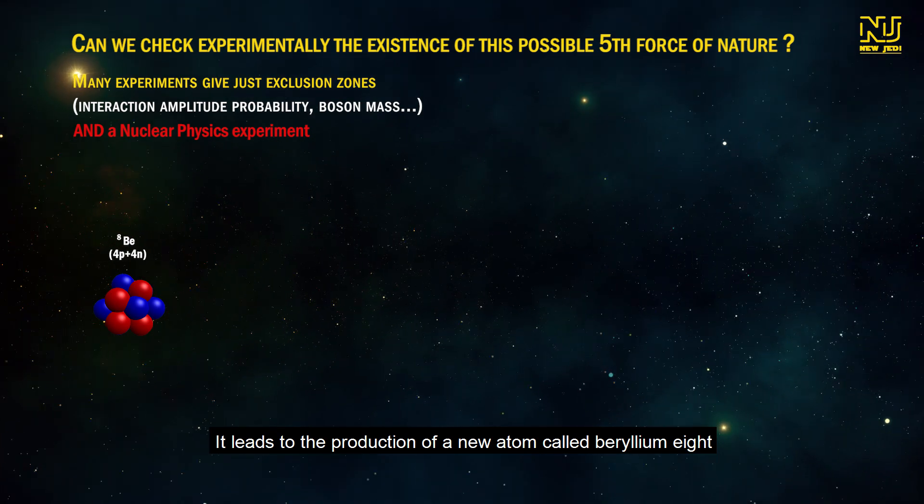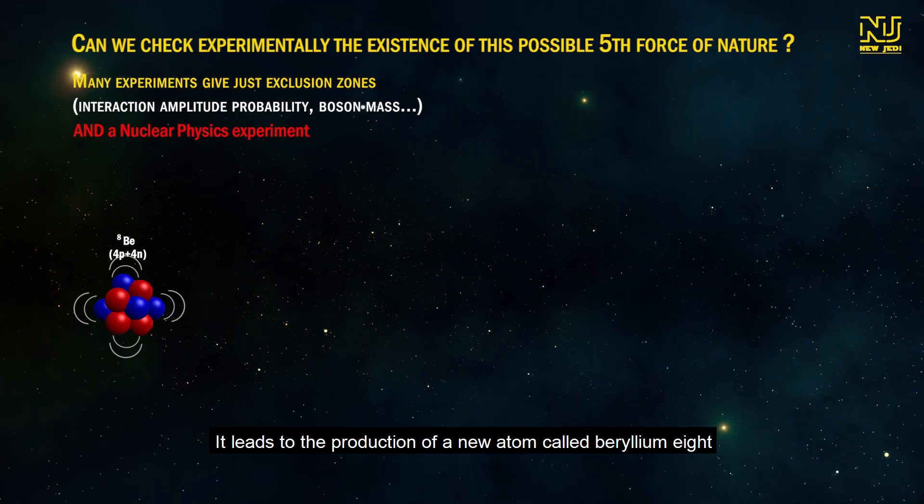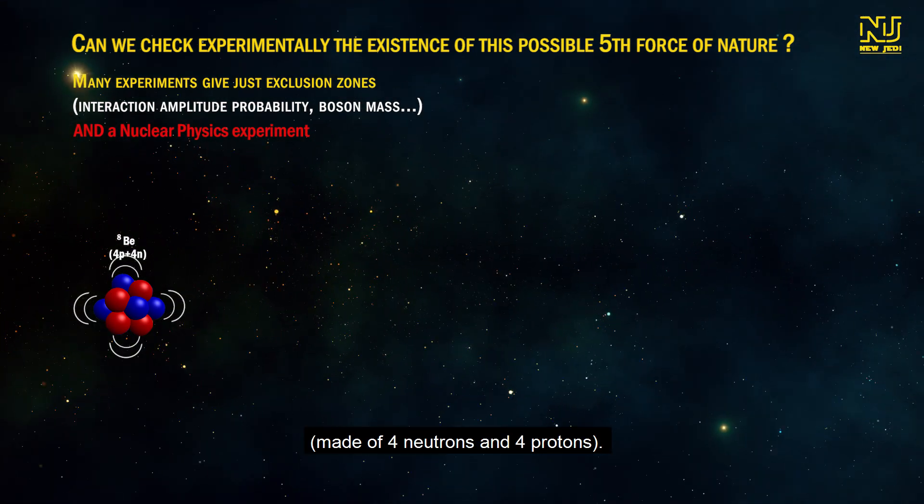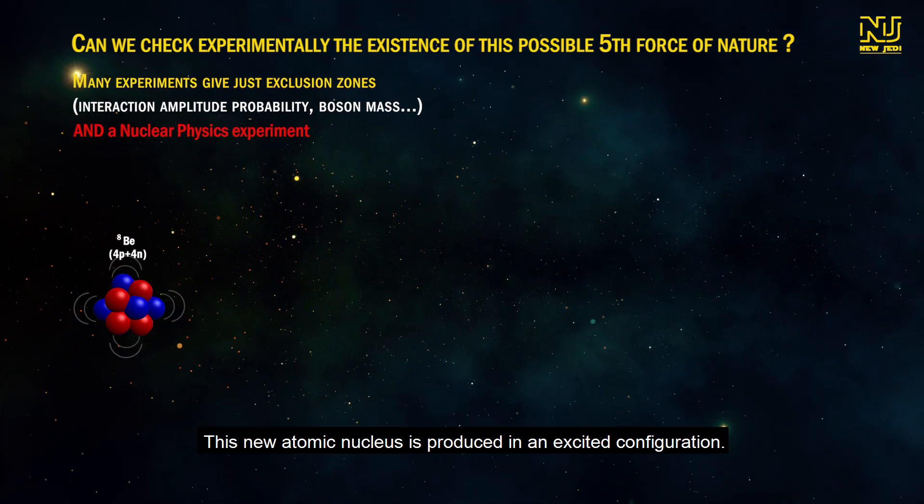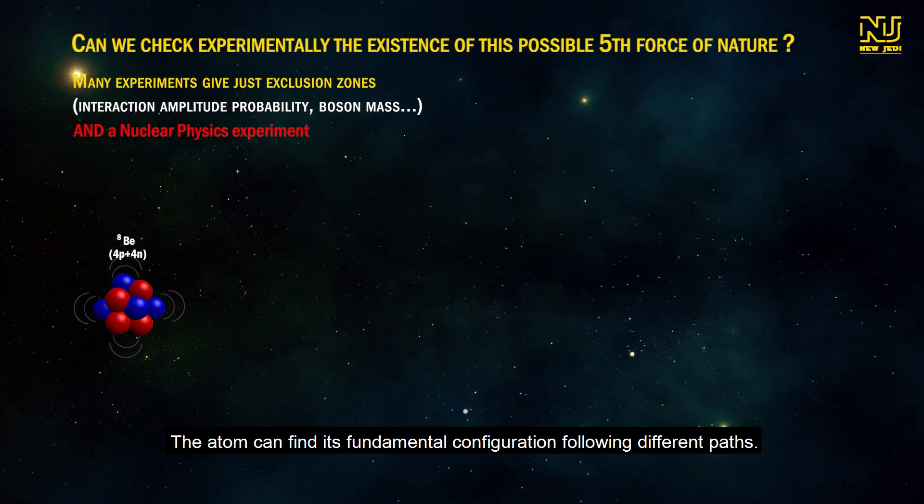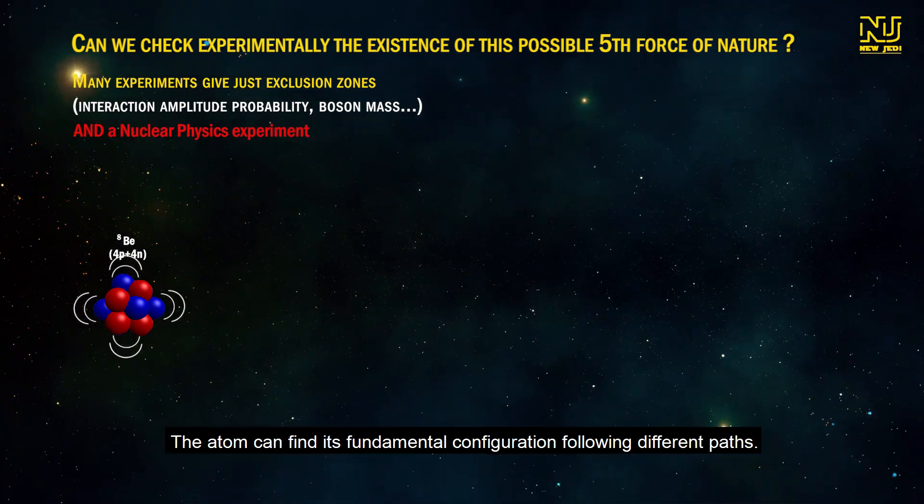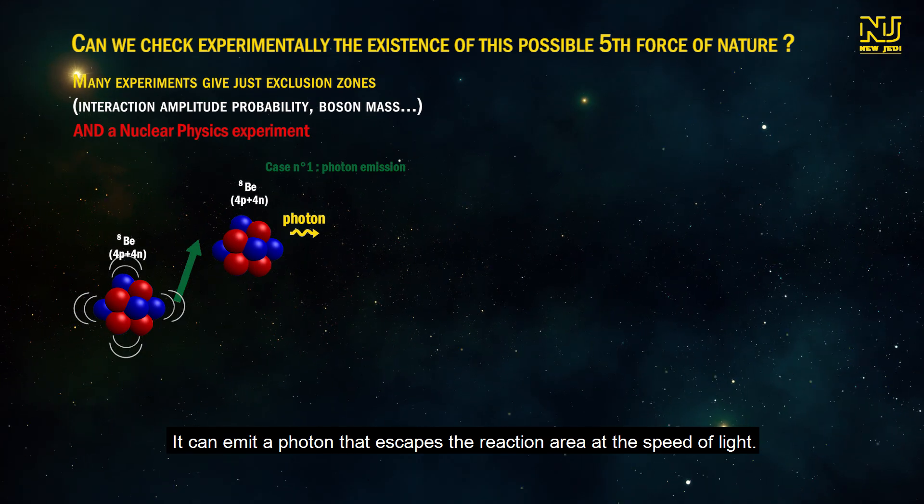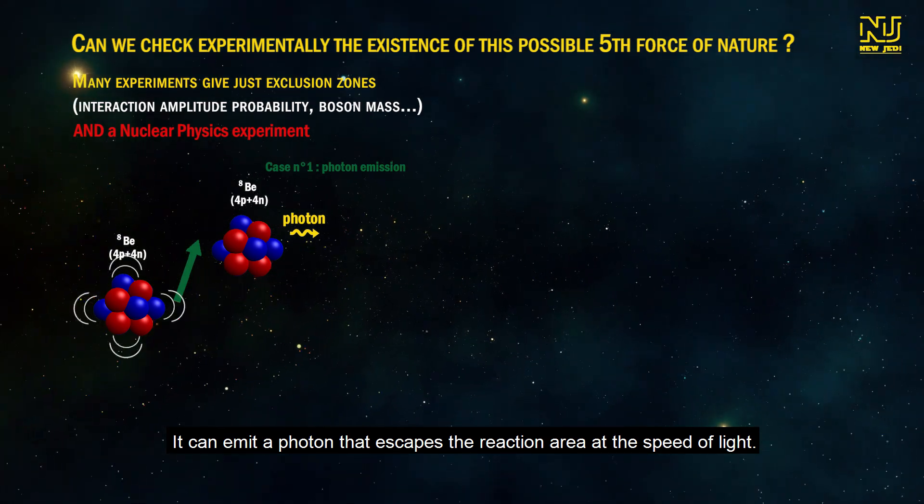It leads to the production of a new atom called beryllium-8 made of four neutrons and four protons. This new isotopic nucleus is produced in an excited configuration. The atom can find its fundamental configuration following different paths.